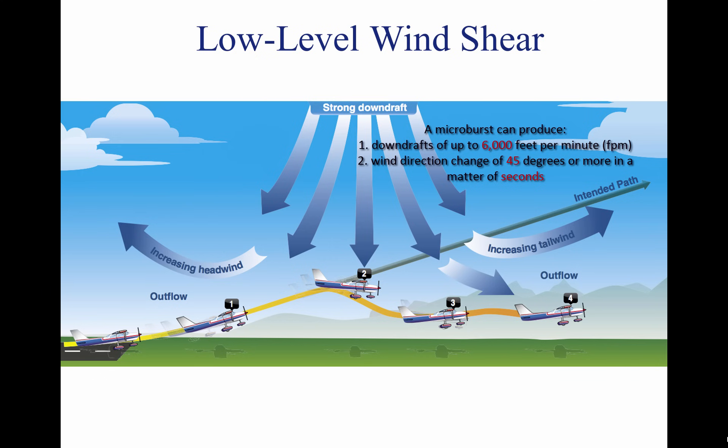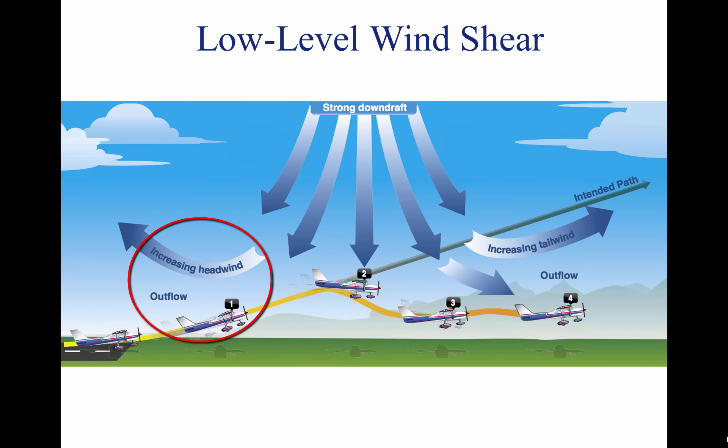It can also produce a hazardous wind direction change of 45 degrees or more in a matter of seconds. As shown above, during an inadvertent takeoff into a microburst, the plane first experiences a performance-increasing headwind, followed by performance-decreasing downdrafts. Then the wind rapidly shears to a tailwind and can result in terrain impact or flight dangerously close to the ground. A pilot must be prepared to react immediately to maintain control of the aircraft.